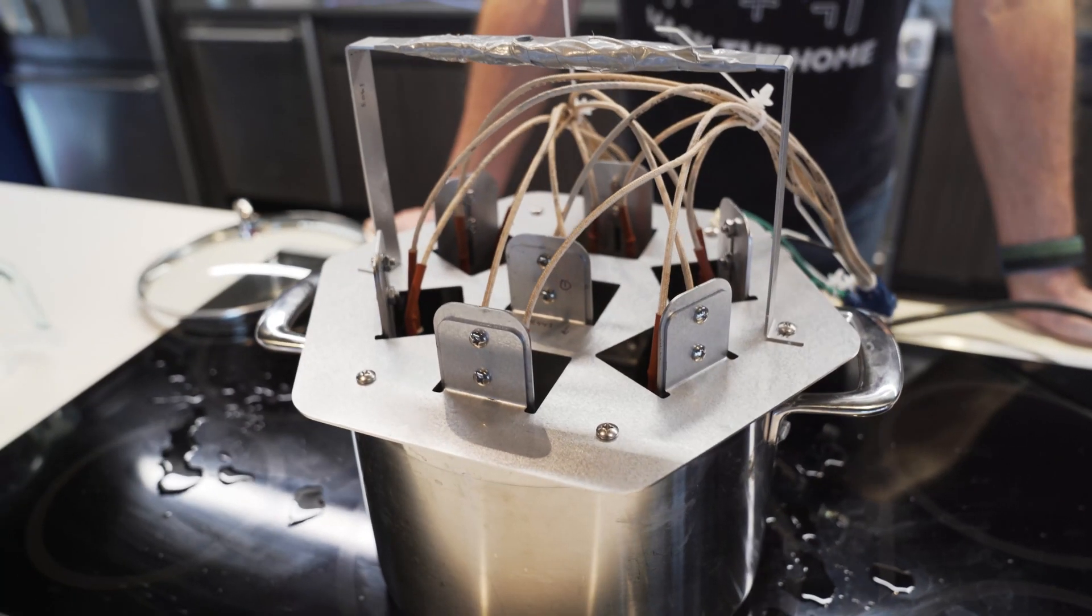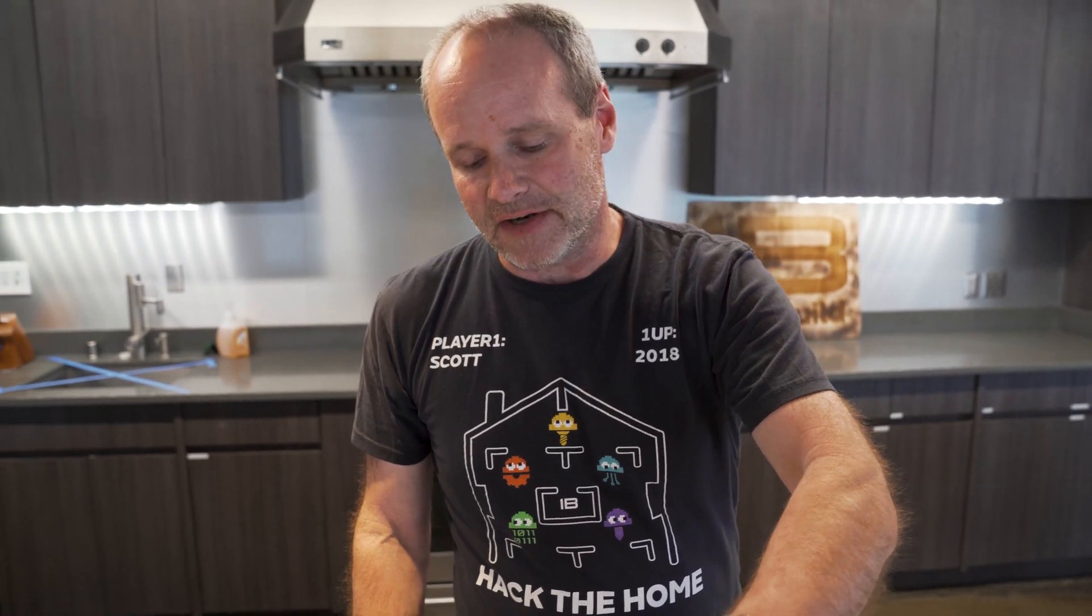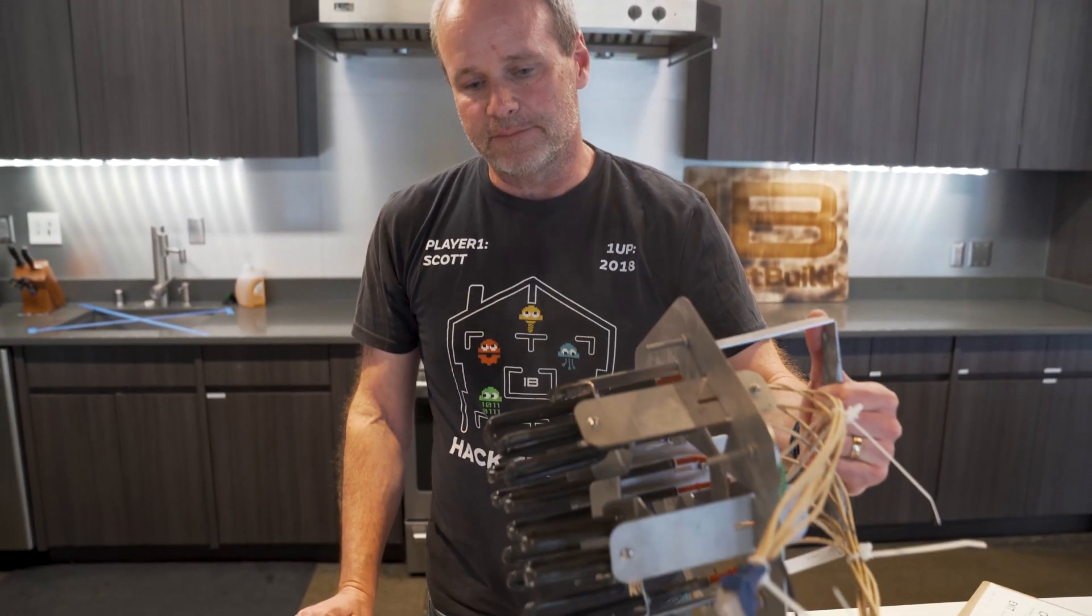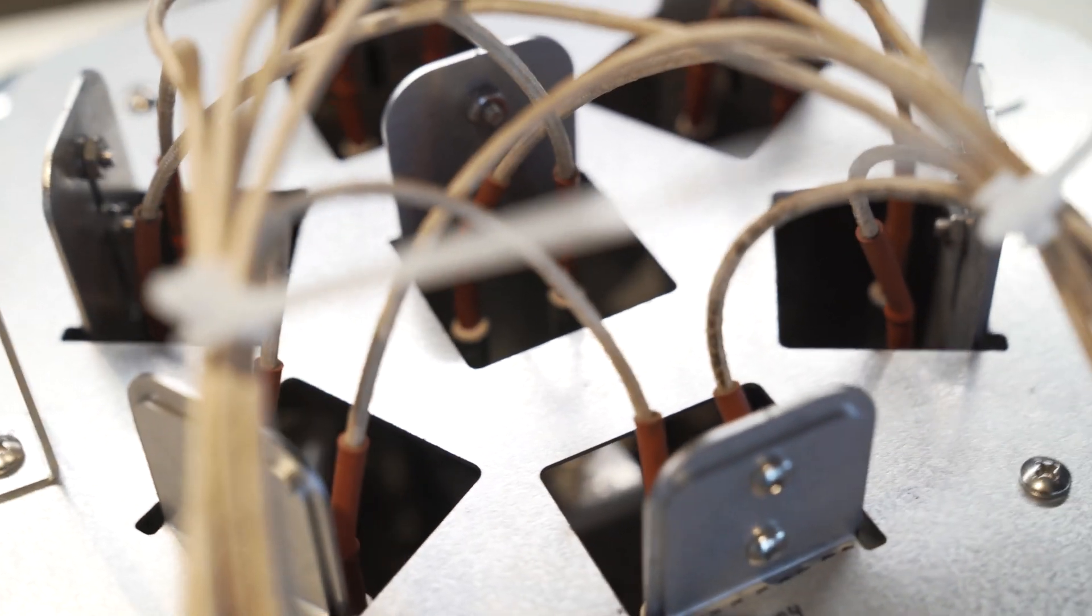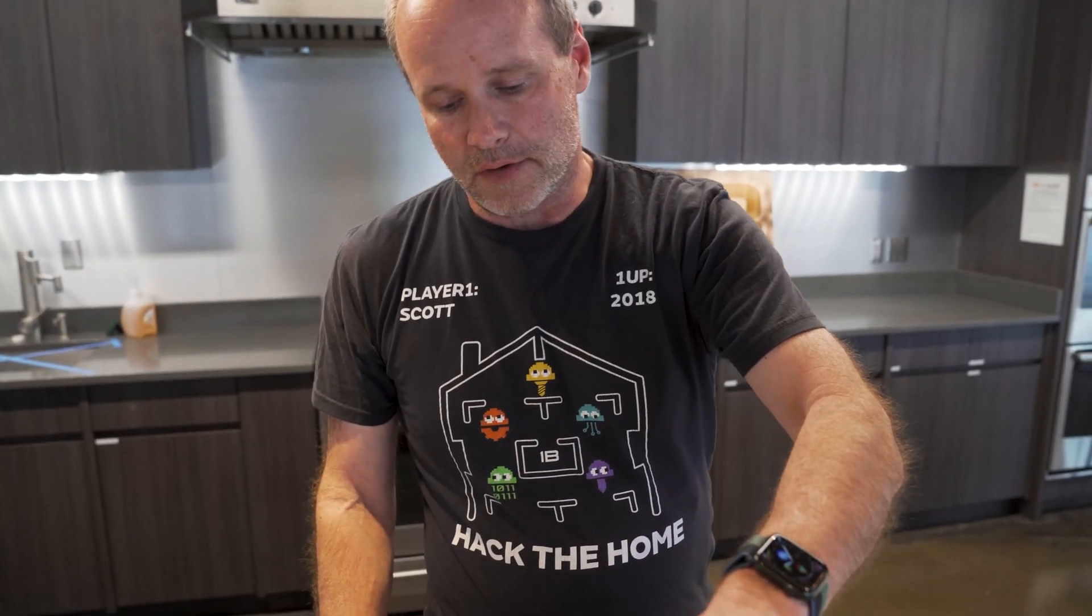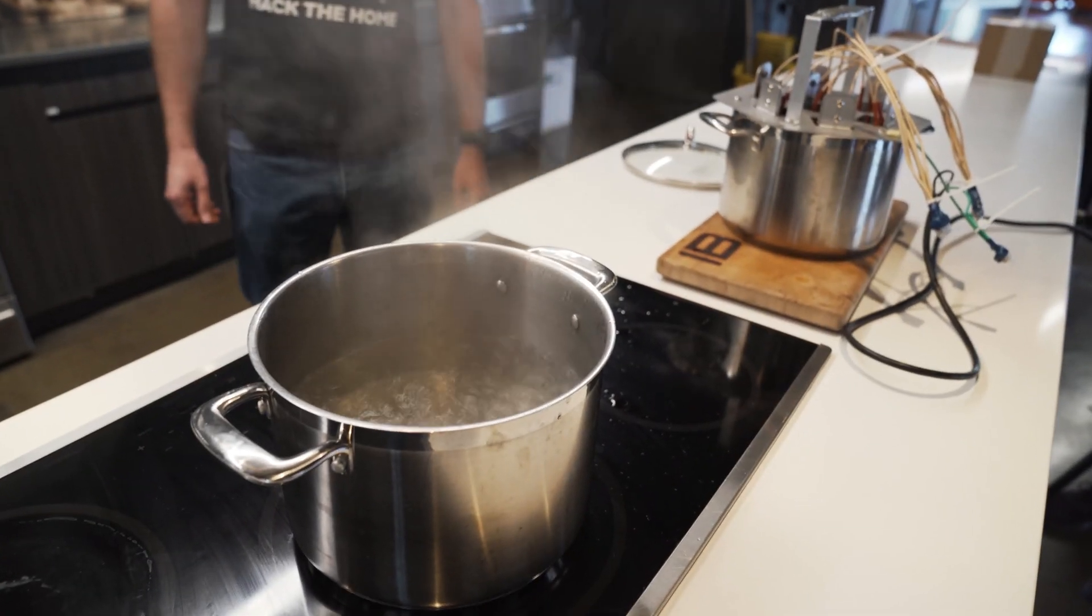So this lid here has got seven heating elements on it. Each of them is 250 watts, so that's 1,750 watts of electrical power, dropped right into the water to heat it up faster and get it boiling faster. Some quick testing showed that this cut the time down by about 50%.